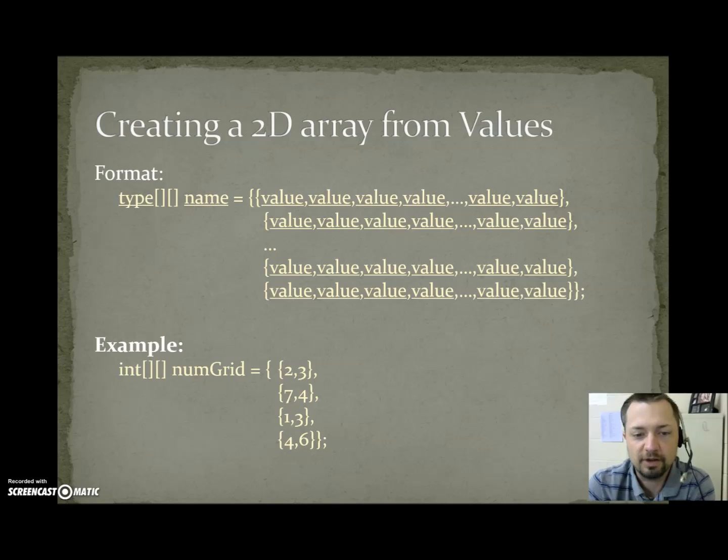This will make more sense with the example below. Int bracket bracket numGrid equals open curly brace, opening the array, and then you're going to list off all the rows of data. A row of data in our number grid is going to be 2 columns. 2, 3 is a row. 7, 4 is a row. 1, 3 is a row. 4, 6 is a row. And then when we're done, we have an extra curly brace at the end, closing off the initial one that says, here's my data.